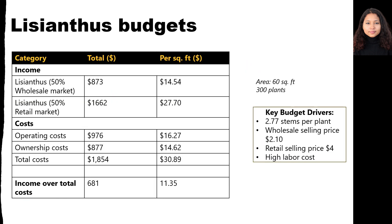This is the snapshot of our budget. Key drivers in this budget are production sizes, selling prices, and labor. The budget assumes 2.7 stems production per plant for 300 plants in 60 square feet. The budget further assumes Lysianthus are sold 50% in the wholesale market and 50% in the retail market. The wholesale price considered is $2.10 and the retail price considered is $4.